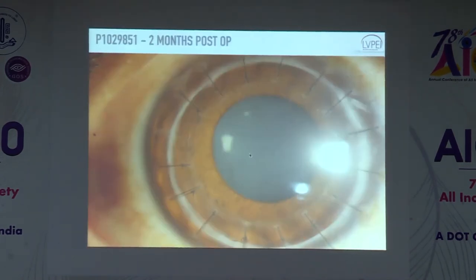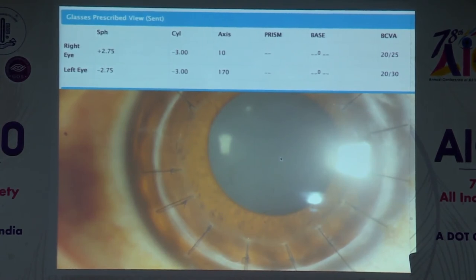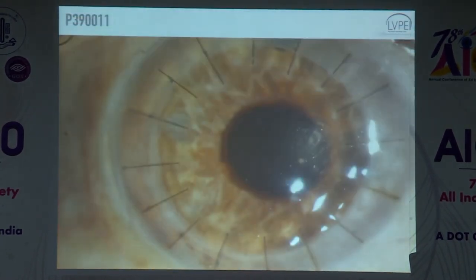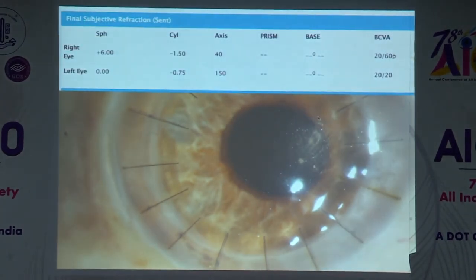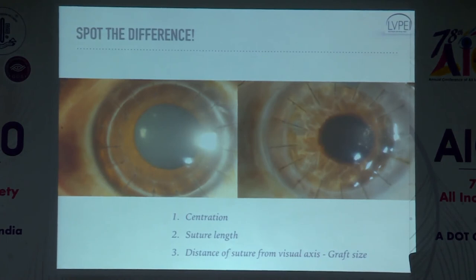Suture type and graft centration are very important for outcomes. A graft nicely centered on the pupil with relatively large size gives very good visual acuity. Comparing two patients: one with a well-centered large graft achieving plus 2.75 minus 3 at 20/25, versus one with a large but decentered graft resulting in more hyperopia and poor post-op vision. Centration on the pupil, not-too-long sutures, and distance from the visual axis all determine post-operative visual acuity.